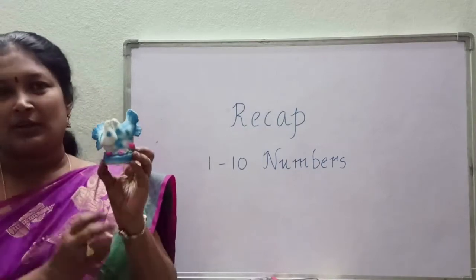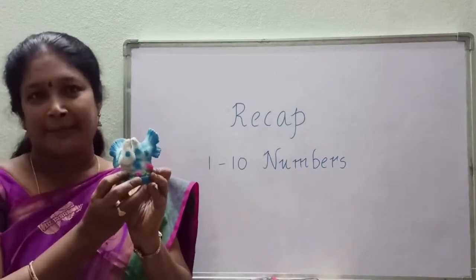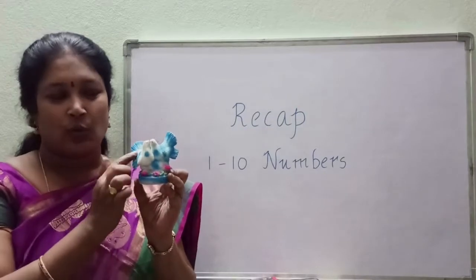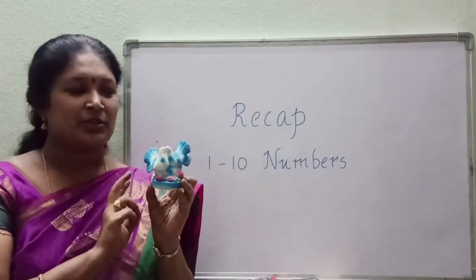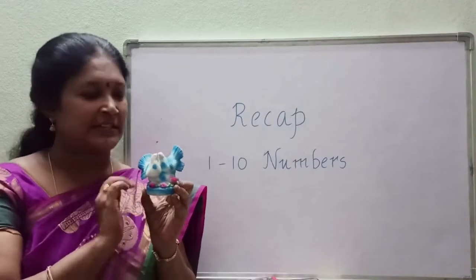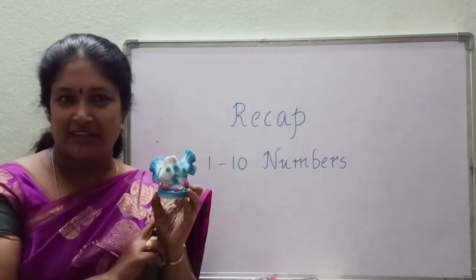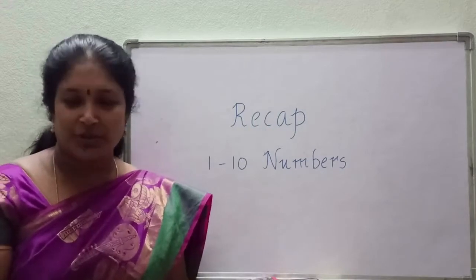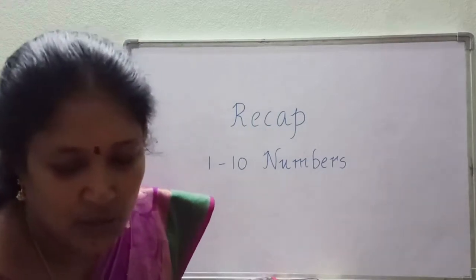So what are these children? Birds. How many birds are there here? 1, 2. 2 birds are there. So what is the number we represent? 2. What is the spelling of 2 children? T-W-O. Now the next one.